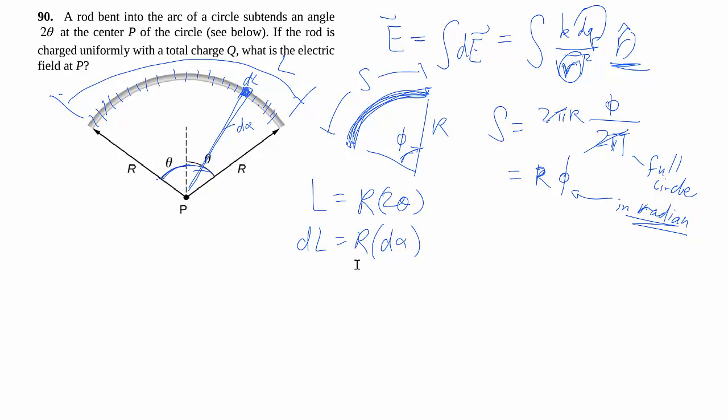So that will help us define our dq being the overall charge divided by the length times dL. So that's r 2θ, r d alpha, r goes away. So we have q over 2θ, d alpha. That gives us a hint that we're going to be integrating against this variable called alpha. So let's go and define all that.